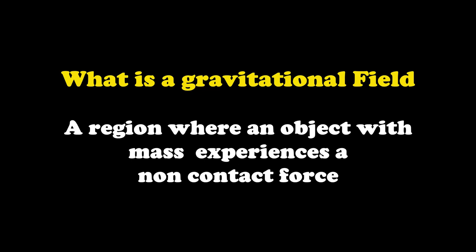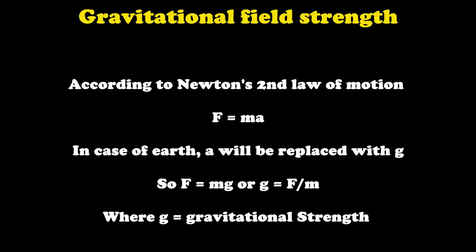How can we calculate the gravitational field strength? In order to calculate gravitational field strength we can use Newton's second law of motion. You know that force is directly proportional to acceleration where mass is constant. In case of Earth we will replace a with g, which is gravitational acceleration. So the equation will be F equals mg, or when we substitute the equation, g equals F over m. For gravitational strength we will use g equals F over m, where F is force and m is the mass of an object.